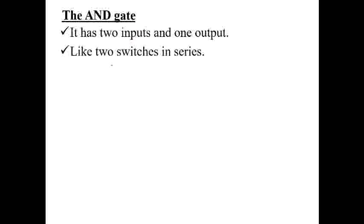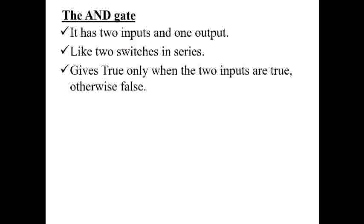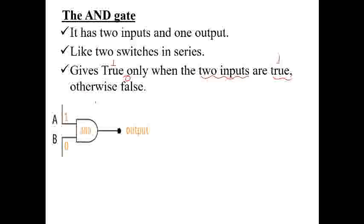The second gate is the AND gate. The AND gate has 2 inputs and 1 output. It is like two switches in series — it gives true (1) only when both inputs are 1; otherwise the output is false (0). That means current appears at the output only if there is current in both inputs.